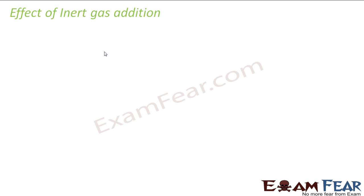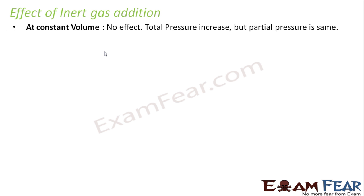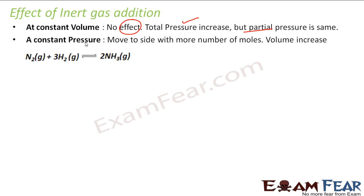Let's talk about the effect of inert gas addition. If the inert gas is not reacting with the system, there are two possible cases. If the volume is constant, there should not be any impact, because the volume is constant — there is no impact. Even if the pressure increases, the partial pressure will remain the same proportionally.